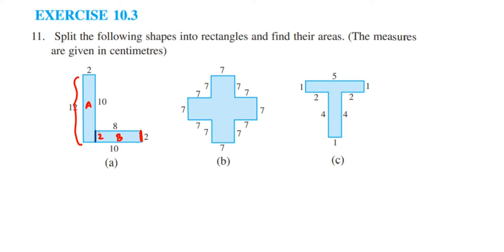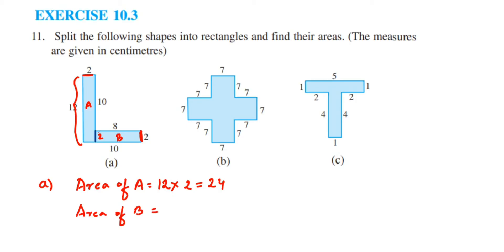Now we have everything we require. For the first rectangle, area of A — since A is a rectangle, area equals length into breadth. Length is 12 and breadth is 2, so 12 into 2 equals 24. Next, area of B: the length is 8 and the breadth is 2, so 8 into 2 equals 16.